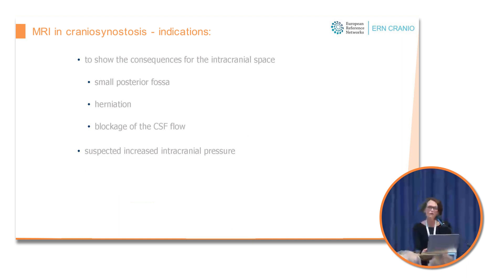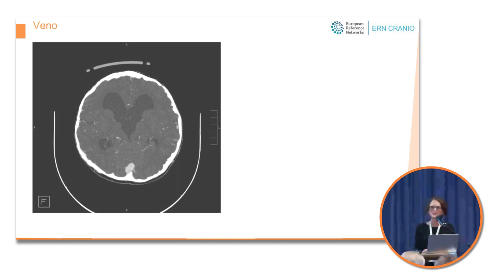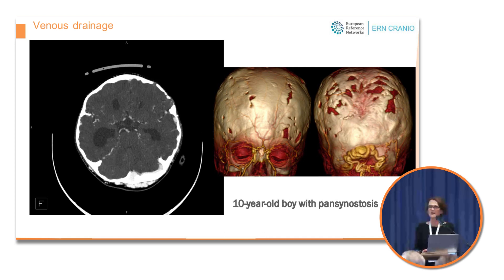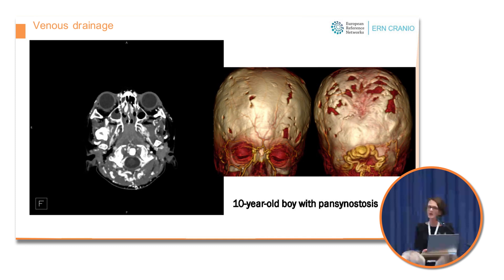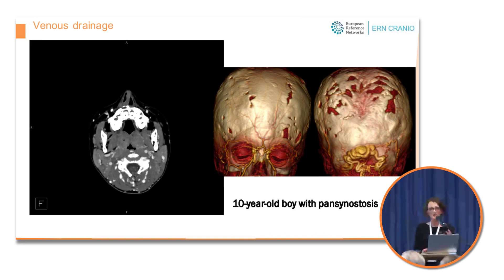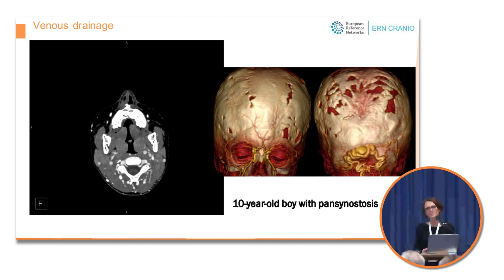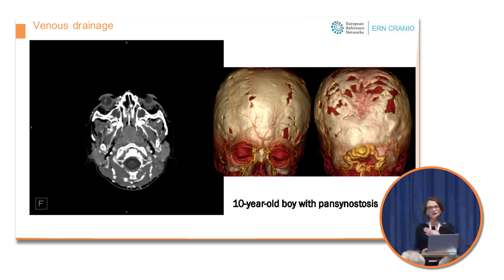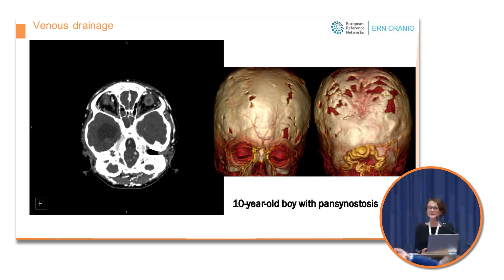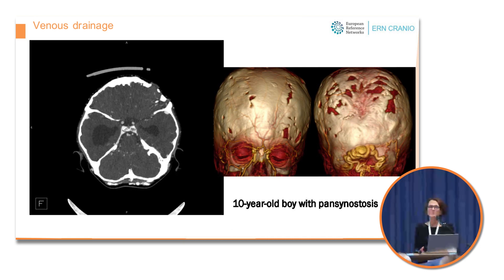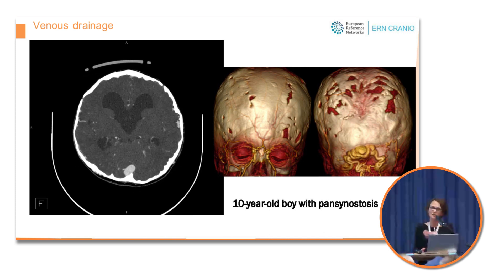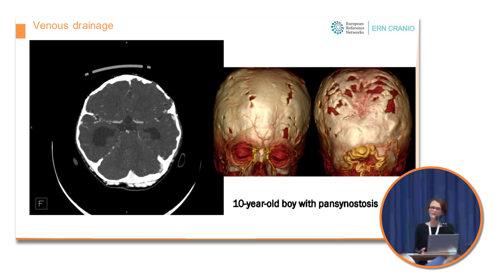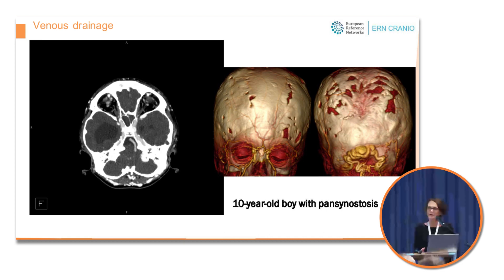We also want to delineate the venous drainage in these patients. Hydrocephalus is the result not only of obstruction of CSF outflow but also of impaired venous drainage. By occlusion of the venous channels in the skull bones, collateral venous drainage occurs via extracranial venous networks. This can take on extreme forms, as in this boy with pansynostosis — his primary venous drainage occurs via these venous networks and his jugular veins are not developed.